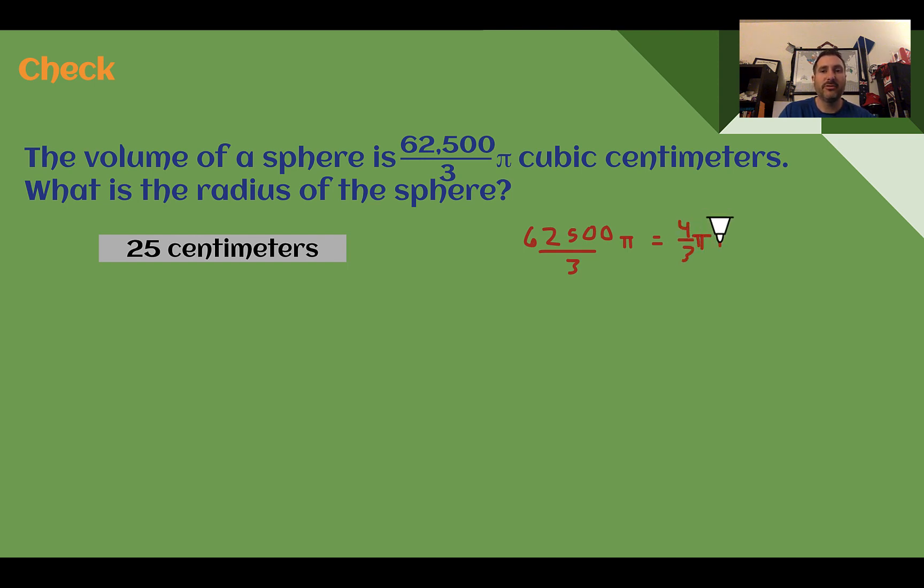If I have 4 thirds I need to multiply by 3 fourths to get rid of that. So multiplying by 3 fourths. Multiplying by 3 here and dividing by 3 here would end up canceling each other out. So 62,500 divided by 4 and then still dividing by pi over here. That cancels. So 62,500 divided by 4. I'm going to use a calculator and I get 15,625.